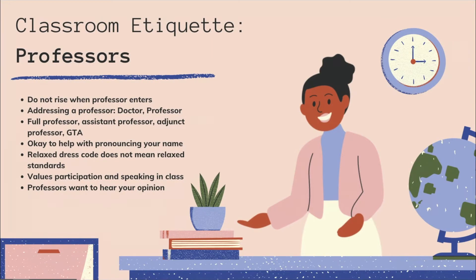Now let's go over classroom etiquette regarding your professors, with whom we tend to have a pretty formal relationship. Do not rise when a professor enters — you should be seated. When you address them, refer to them in the way they ask, normally doctor or professor depending on their level of education. There are also different levels of professor: full professors, assistant professors, adjunct professors, and GTAs or graduate teaching assistants. It's also okay to help your professor pronounce your name.